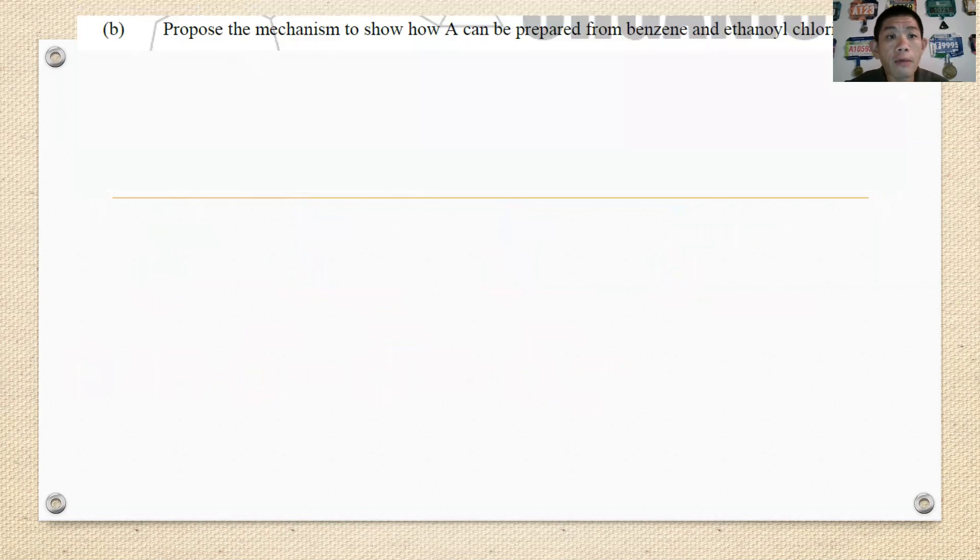Then we continue to 2b. Propose the mechanism to show how A can be converted from benzene and ethanoyl chloride. You have to propose the mechanism for the reaction. Every time when you are about to explain the mechanism of the reaction, I will usually advise you all to write out what is the type of reaction. So the type of reaction is an electrophilic aromatic substitution reaction.